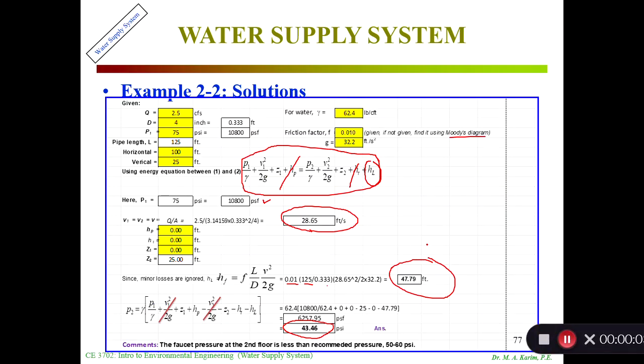In the last lecture, we stopped at this slide. We saw how to solve the problem and got the pressure is 43.46 psi, which is less than the recommended 50 to 60 psi range.